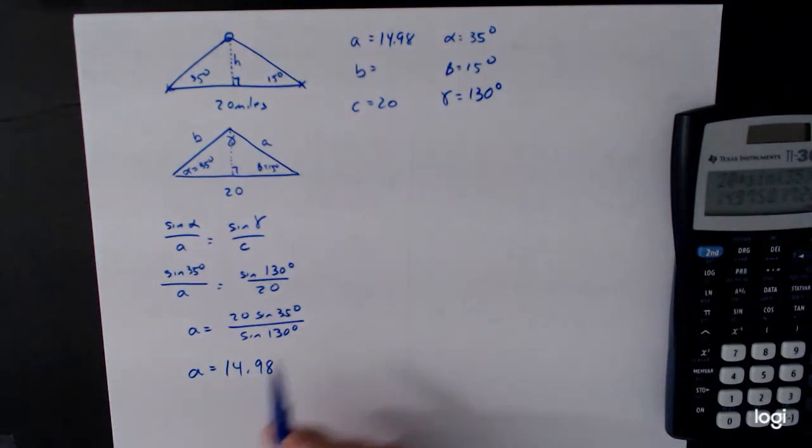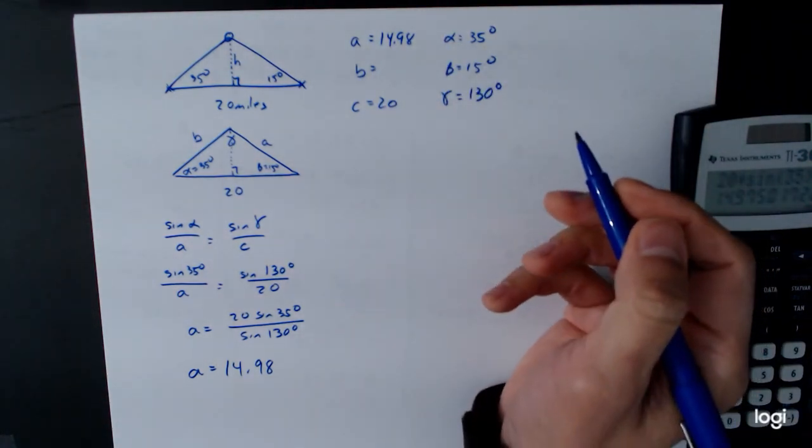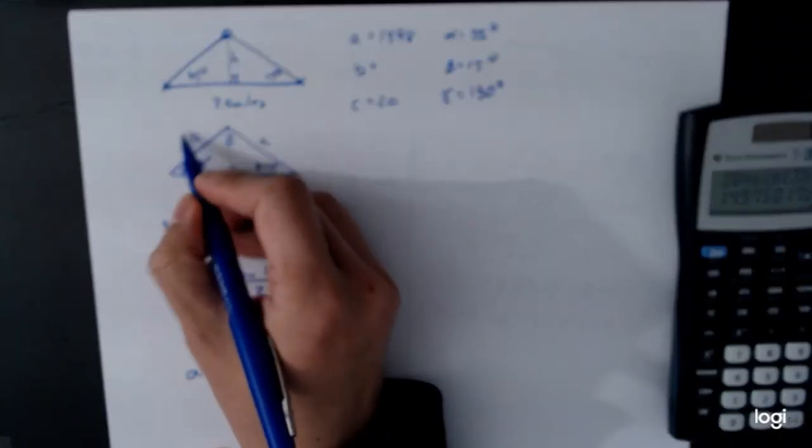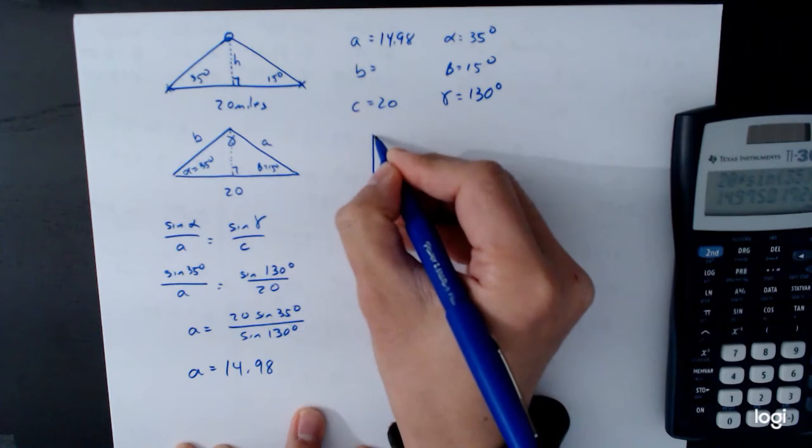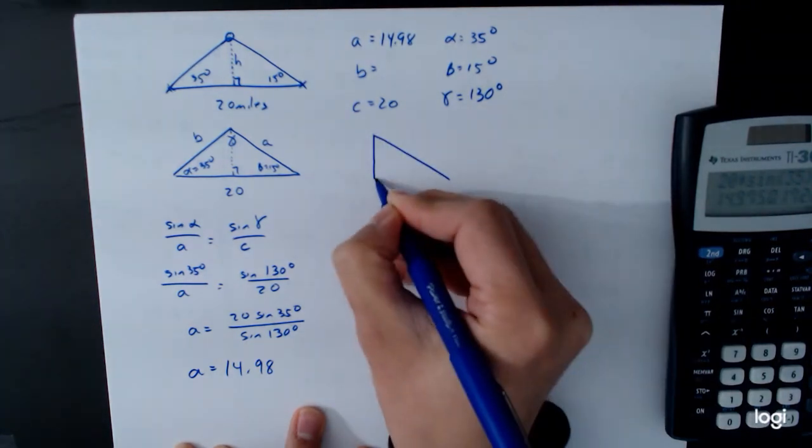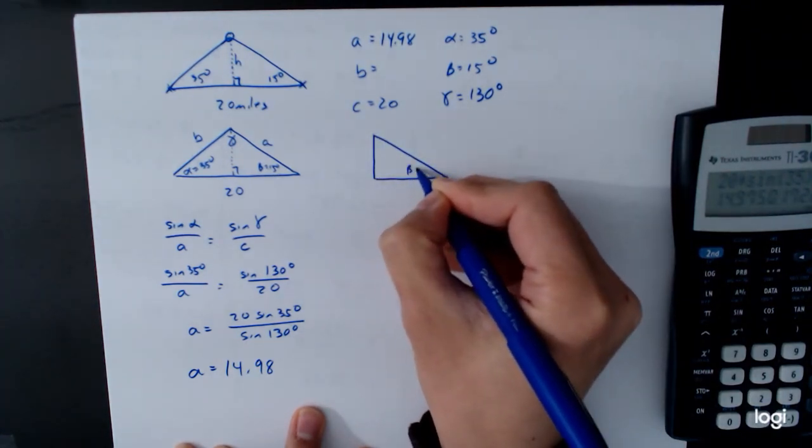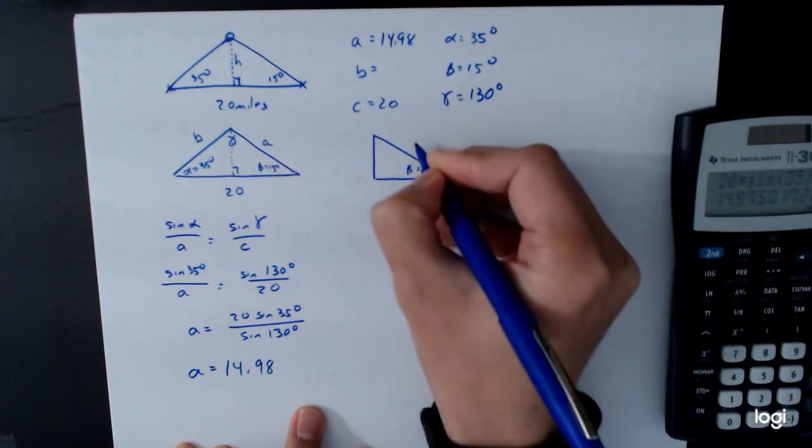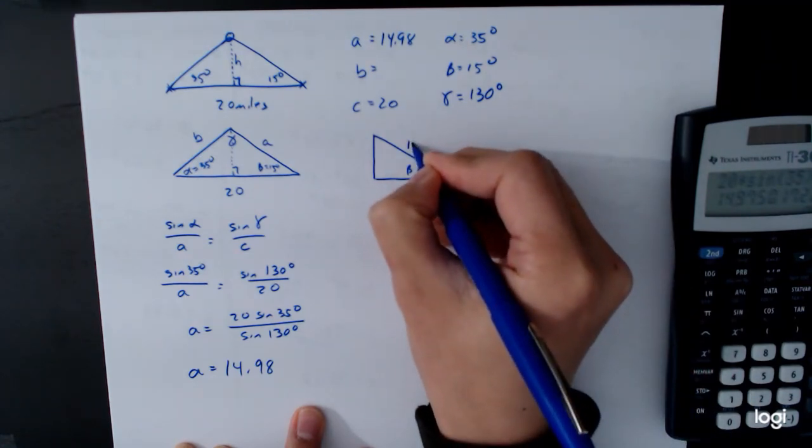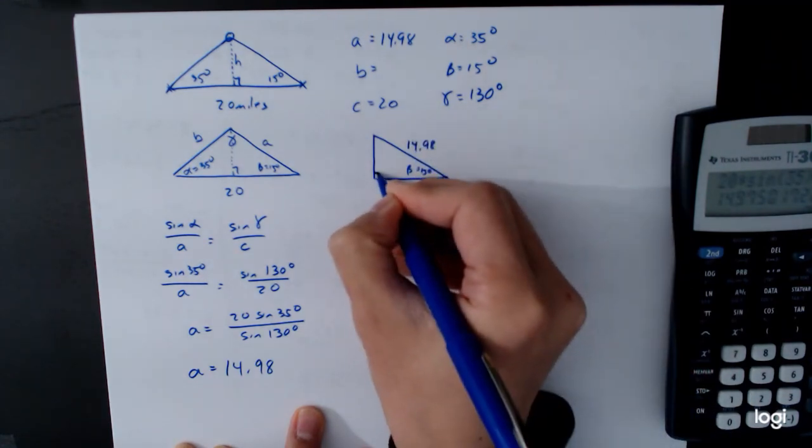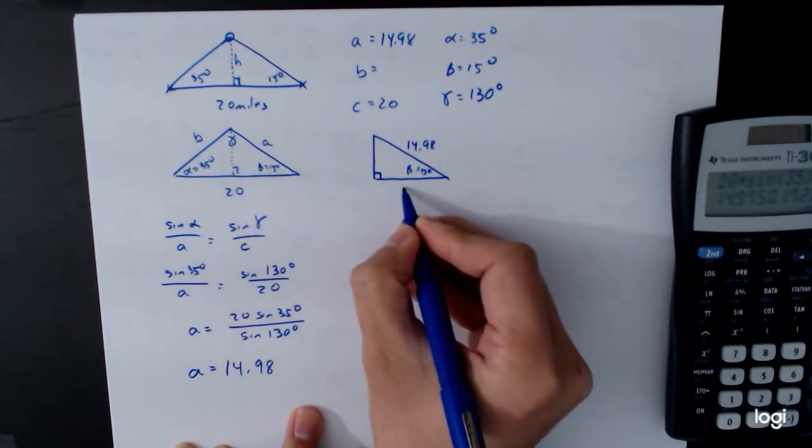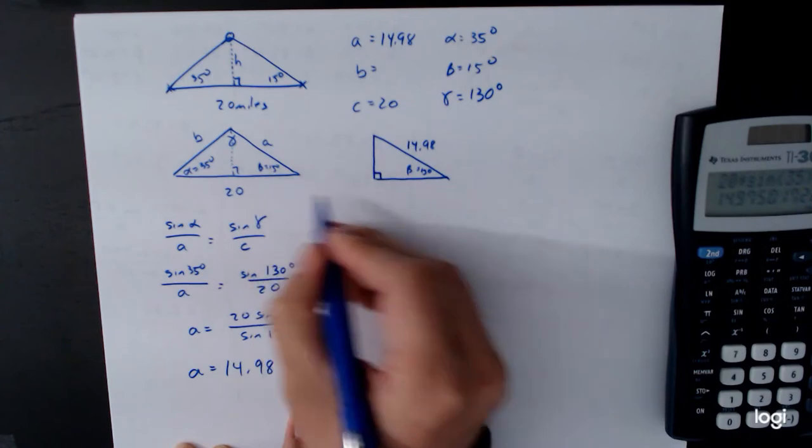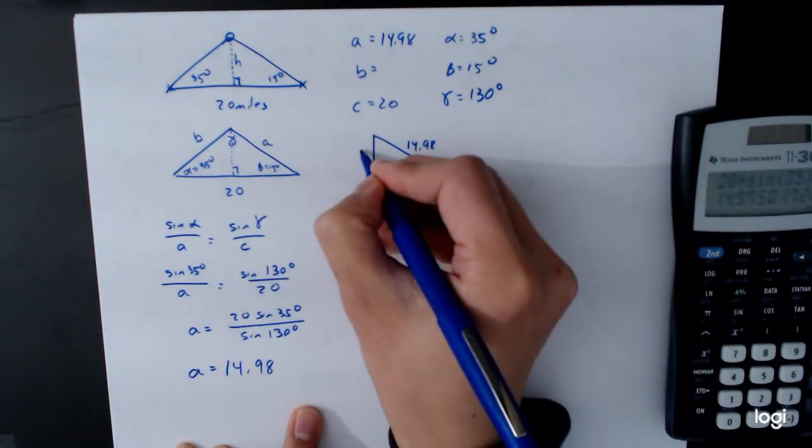Now we could go ahead and solve for b from all of this if we wanted to. But it turns out that this value b really isn't important. What we want to figure out is this value h. And so we'll draw another triangle with just this part set up. So beta is equal to 15 degrees. We have a here which is now 14.98. This is a right triangle. We don't have this length. This length right here is not 20 because 20 is the full thing. But we actually don't care because we want this one.